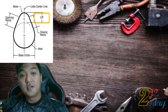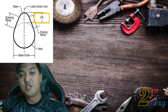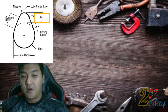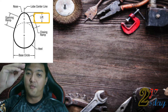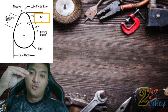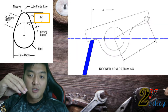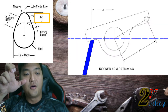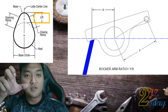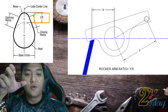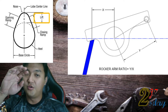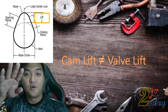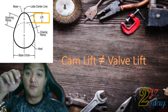Cam lift is the maximum distance that the cam lobe pushes the lifter. However, some cams press onto rocker arms, and rocker arms have their own ratios that multiply the overall valve lift, so cam lift should not be confused with valve lift.